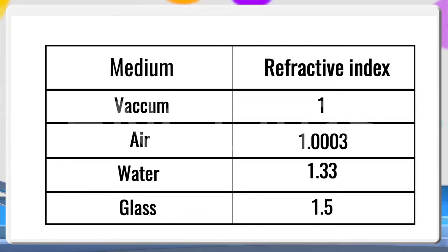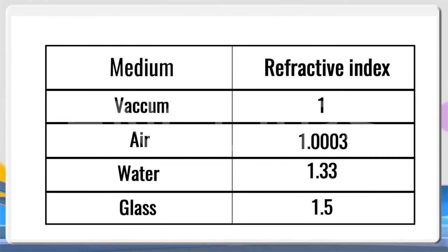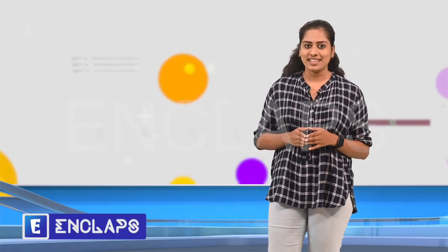In this table, you can see the refractive indices of different materials. The refractive index of vacuum is 1 and the refractive index of air is 1.0003. For water, it is 1.33 and for glass, it is 1.5. In this session, we have studied what refractive index is and the relation of refractive index with the speed of light in a medium.